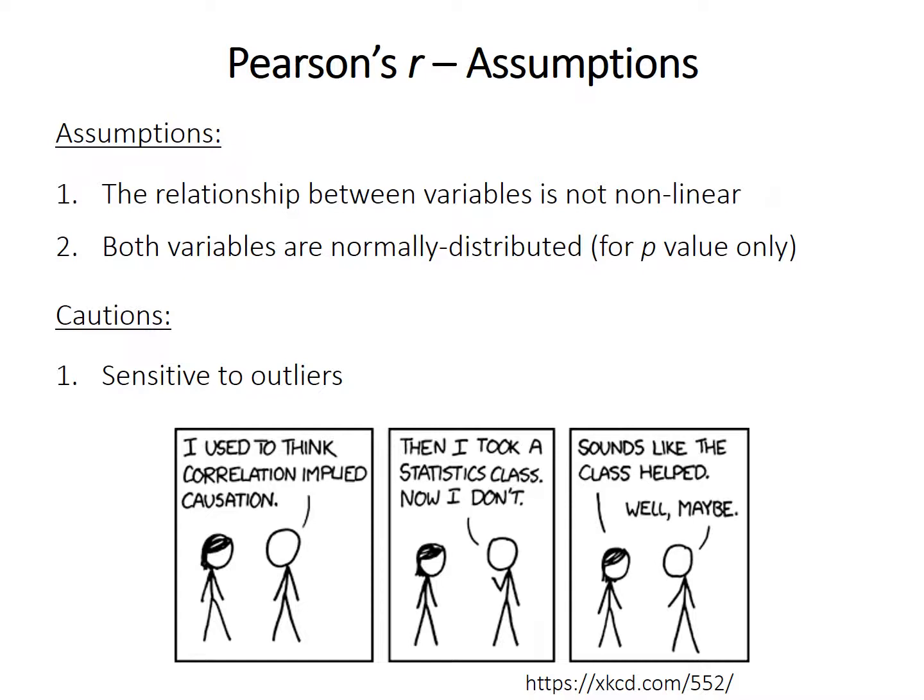To reiterate the assumptions: the relationship between the variables can't be nonlinear — there can be no relationship or just a cloud of points, but not a nonlinear relationship. Both variables must be normally distributed, which technically applies to the p-value because of the conversion to the t-statistic. Also be cautious that the method can be quite sensitive to outliers. The well-known phrase 'correlation doesn't imply causation' is very widespread, but correlation can often be a good clue for causation — it's not proof, but if you have a mechanism that explains the relationship, it gives hints about what might be causing changes.